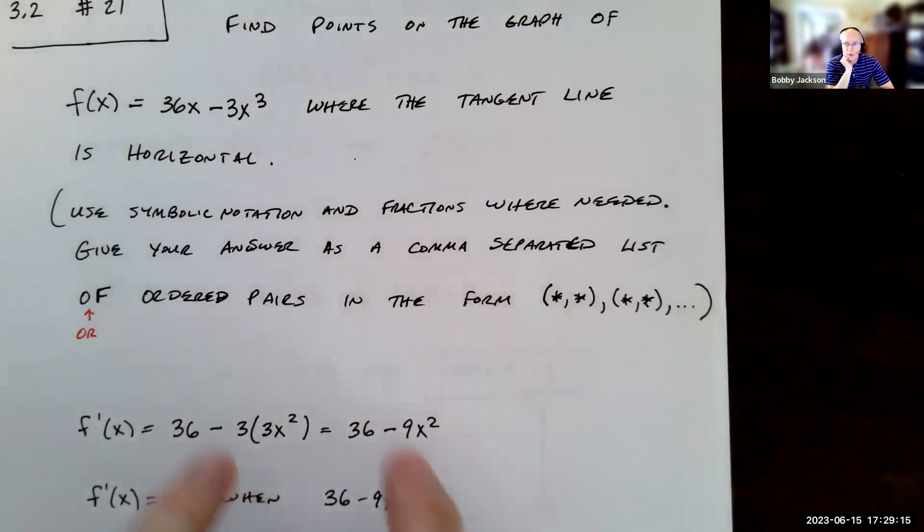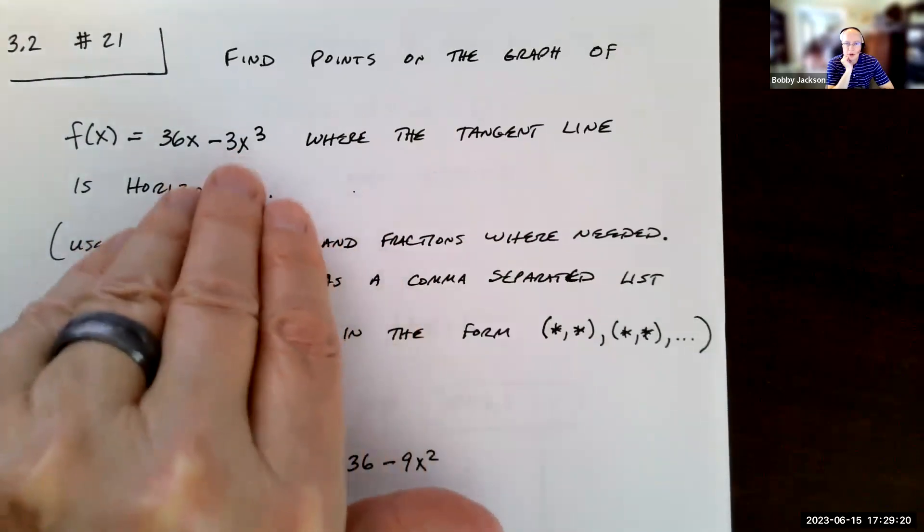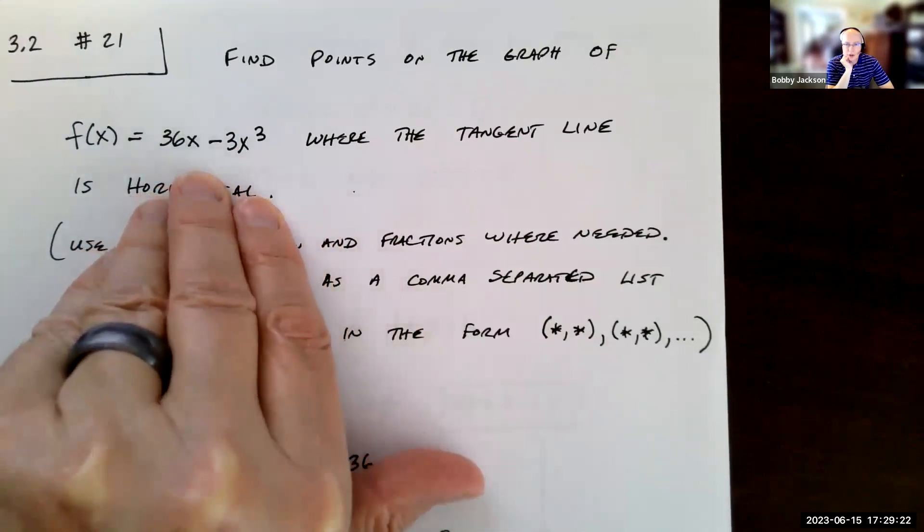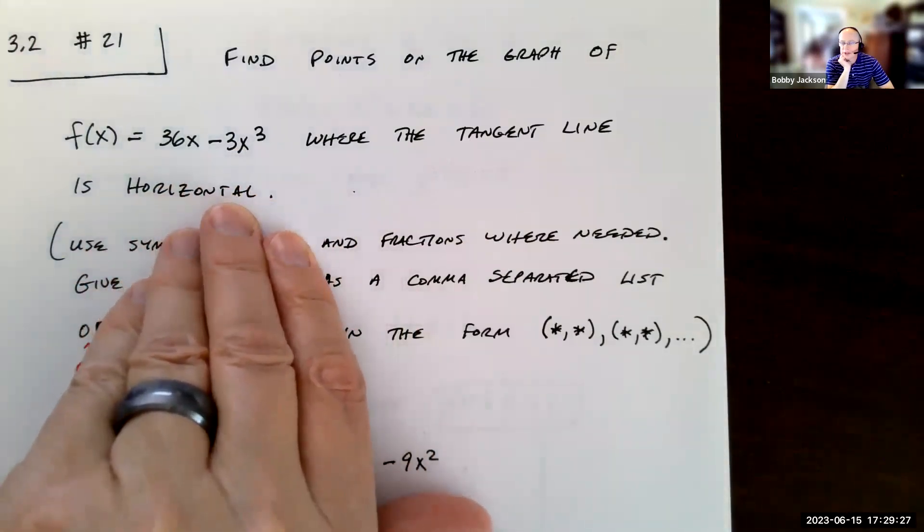Okay, so where is the tangent line going to be horizontal? Well, that's going to happen when the derivative is zero. So our goal is to find the derivative of this function and set that equal to zero and find the values of x that satisfy that.